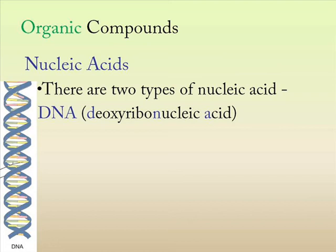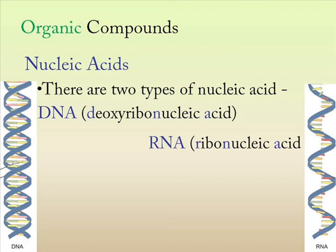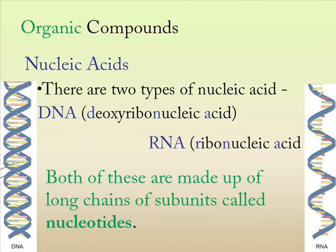Another type of nucleic acid is RNA, which is a single-stranded type of nucleic acid. Both of these nucleic acids are made up by the joining up of lots and lots of little subunits called nucleotides, and we're going to be having a look at these a fair bit also within coming weeks.